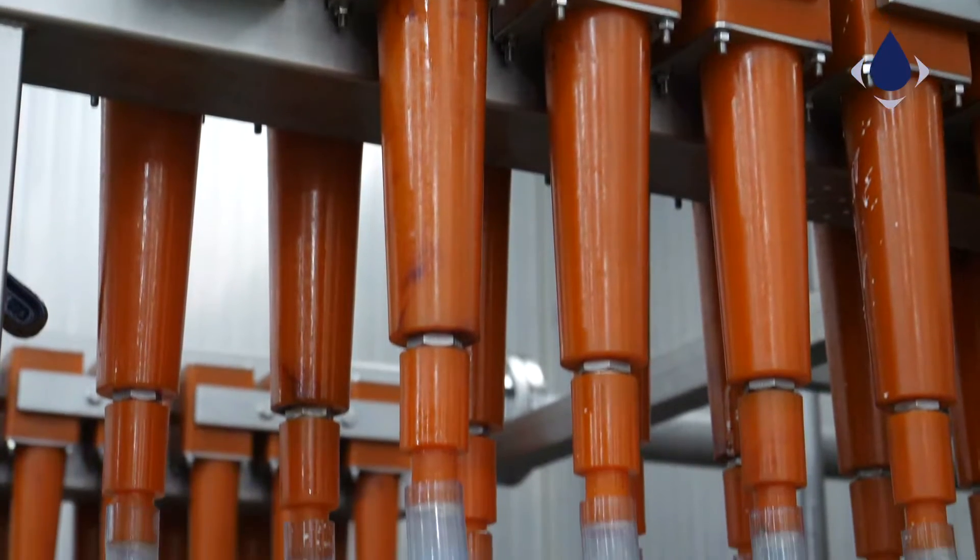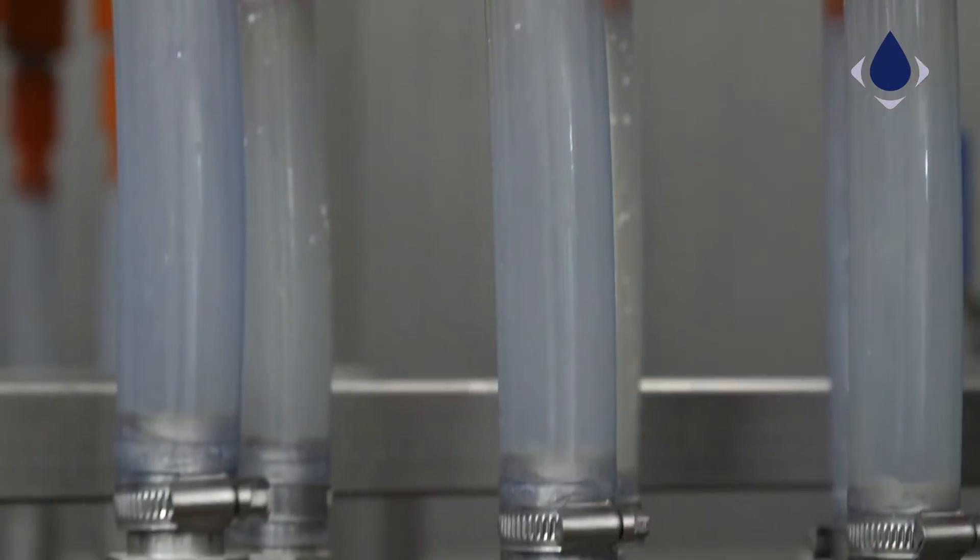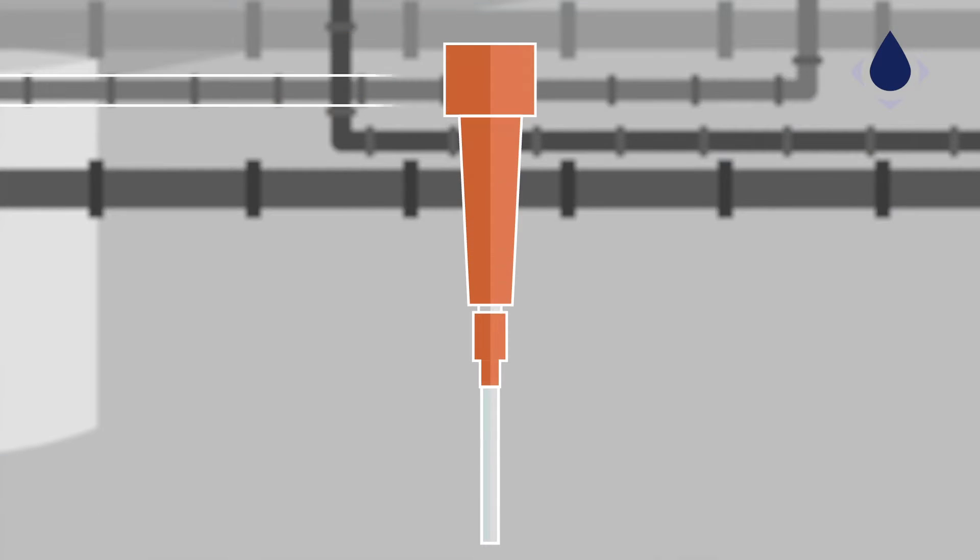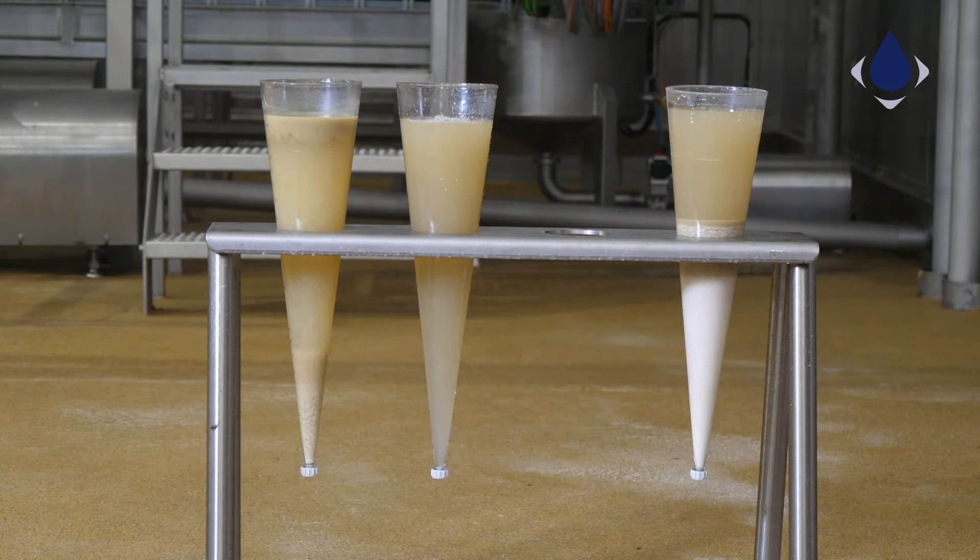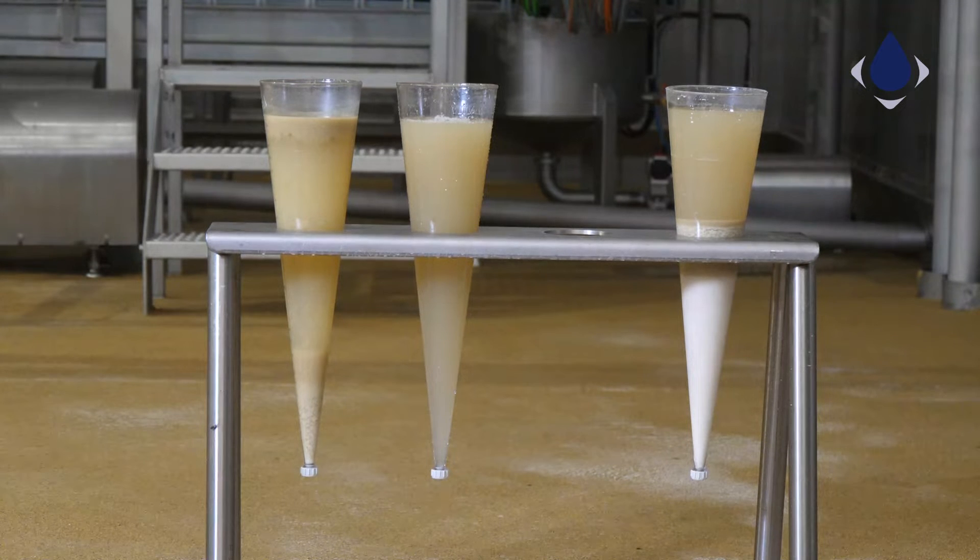The processed water with starch enters the hydrocyclones. Starch is separated from the water by centrifugal forces. Upstream, clean process water is released and returned to the process. Downstream, concentrated starch is released. This is the result of a good working starch recovery system.